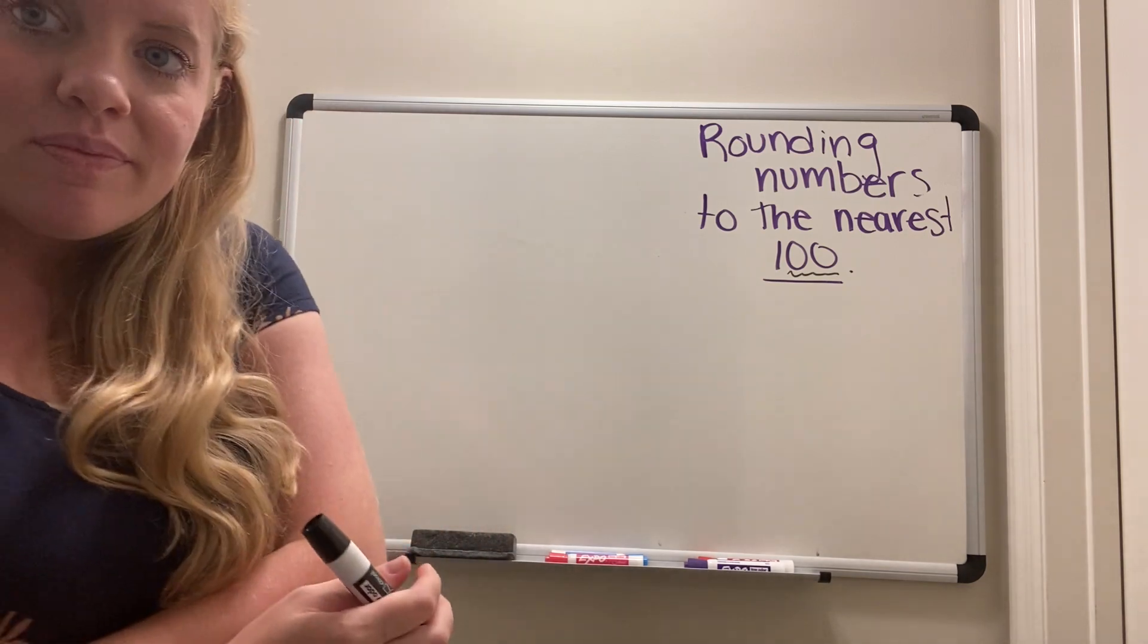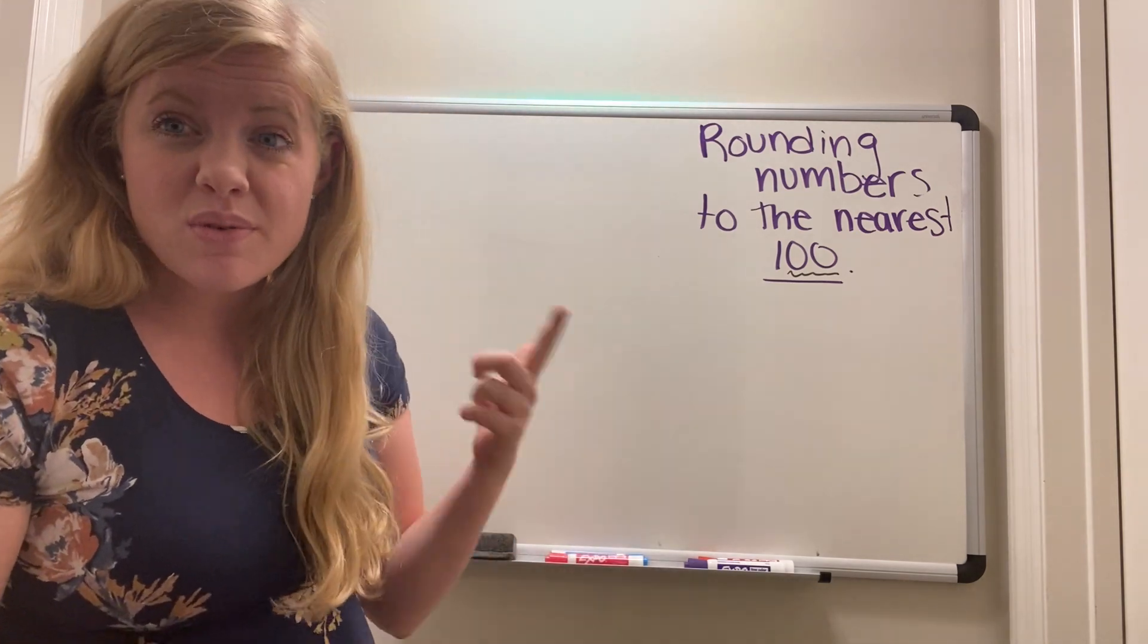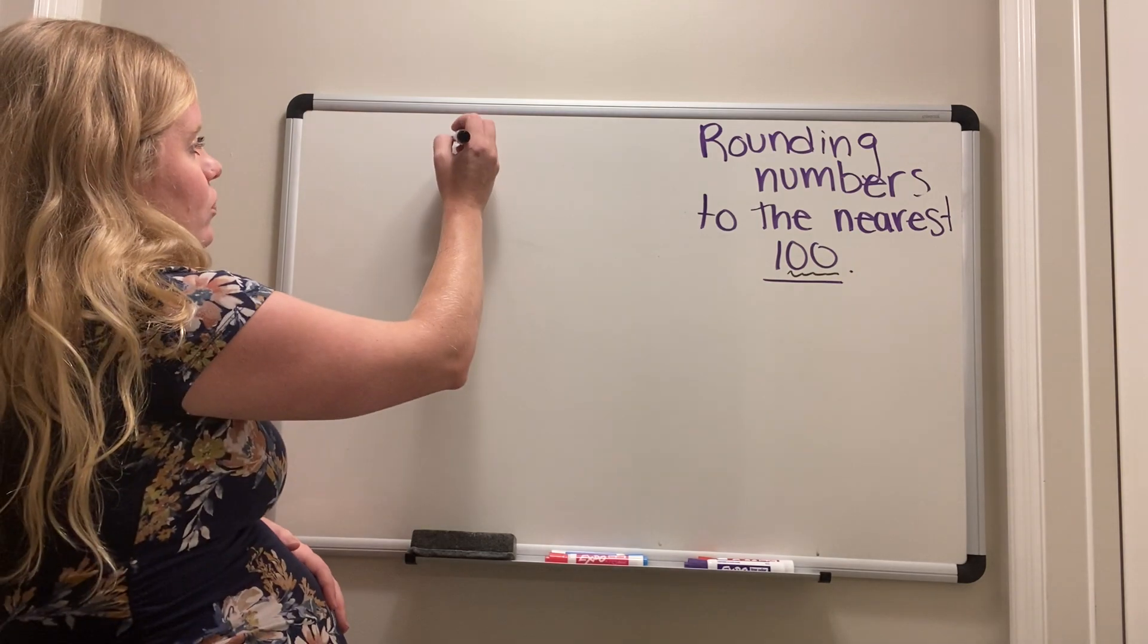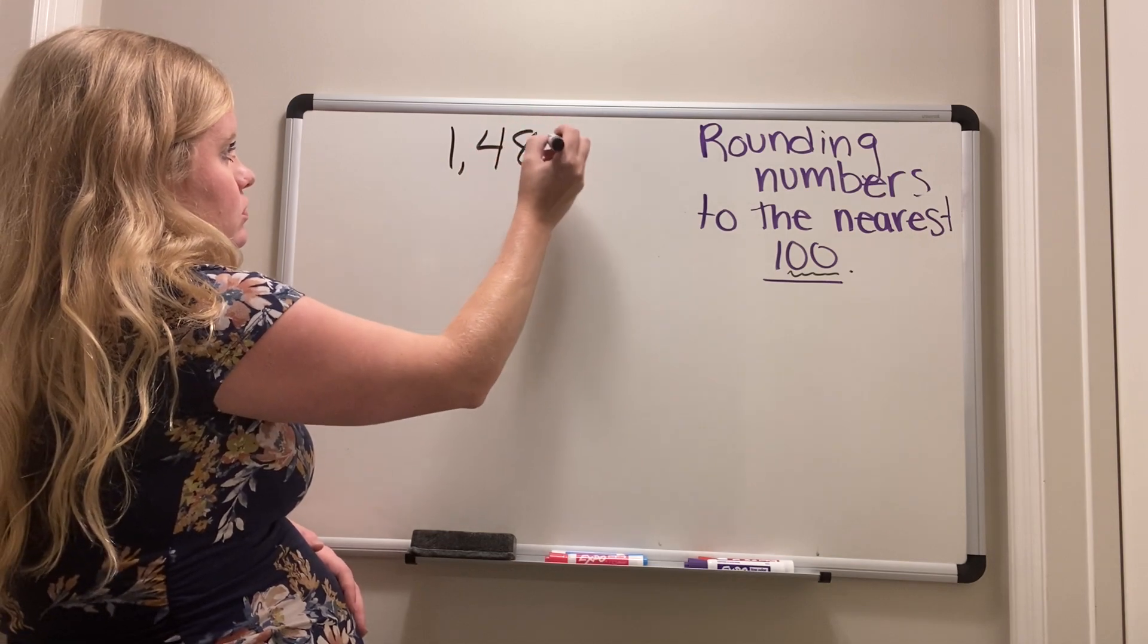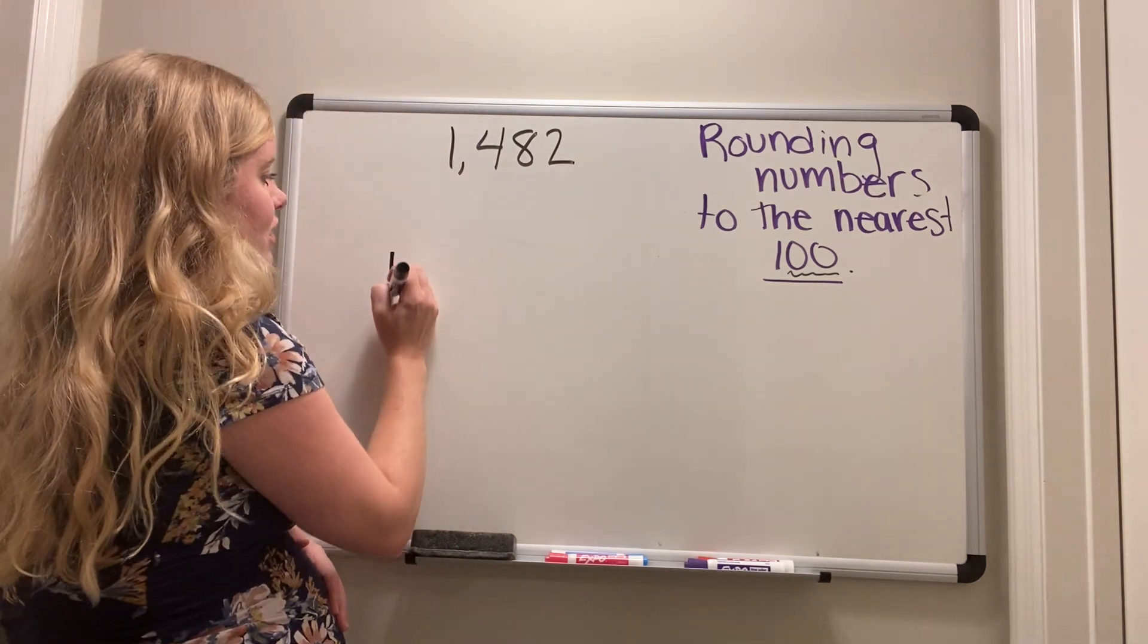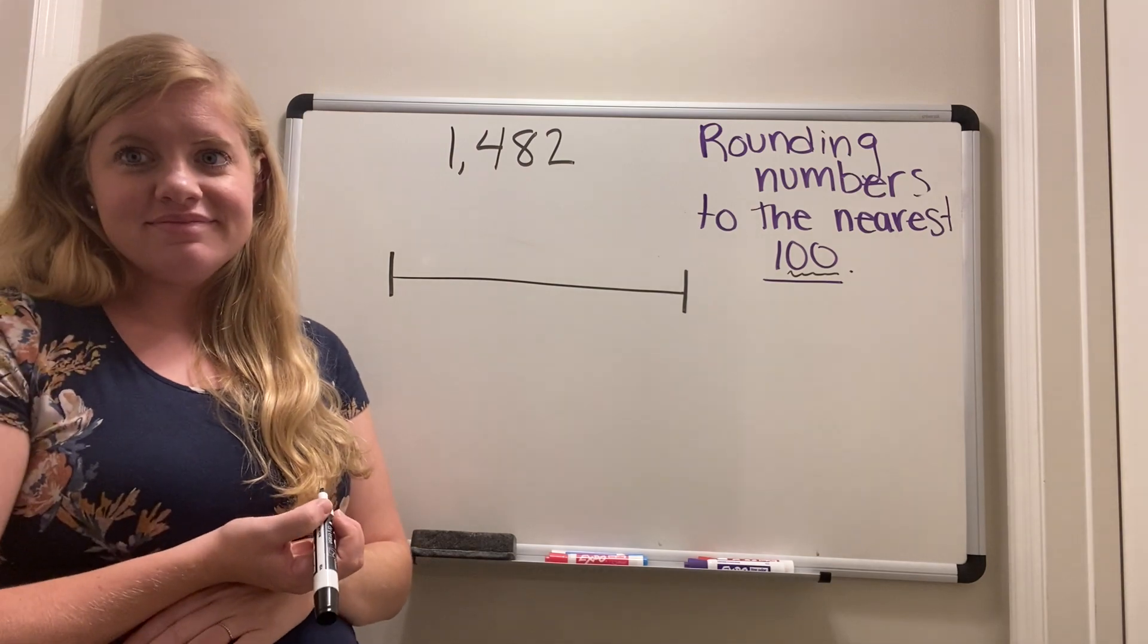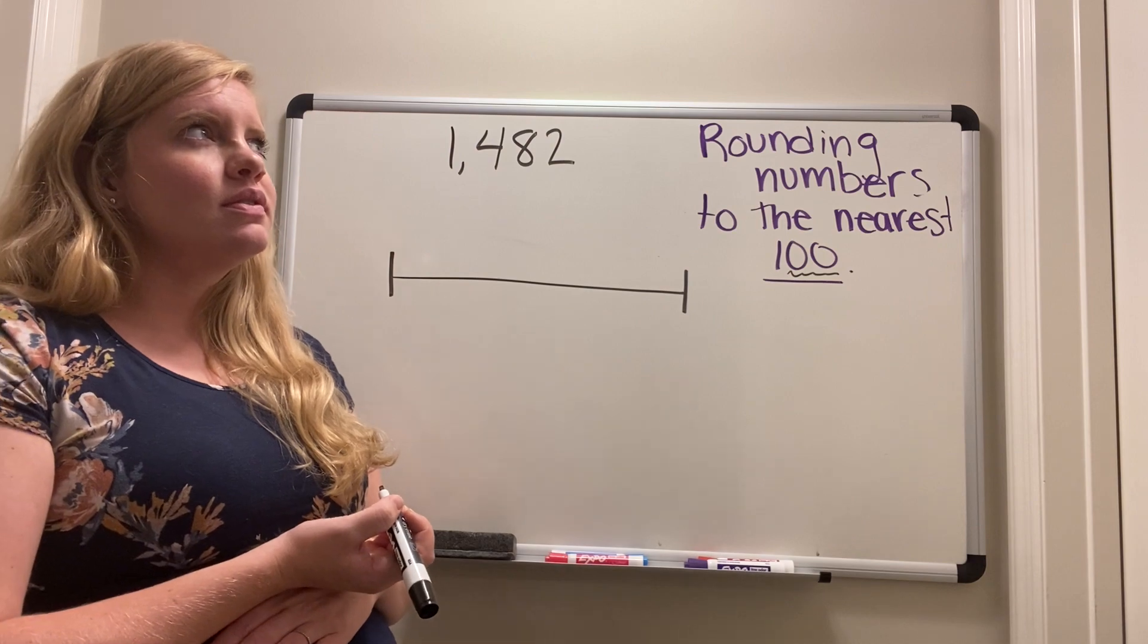So scholars, I'm going to give you a number. I want you to round it to the nearest hundred and I want you to do it using whatever strategy you want. You can use the poem or the number line. I highly recommend the number line. Pause your device. Draw out your number line and round this to the nearest hundred. 1,482 to the nearest hundred. Pause your device. Do it on your own and then come back.